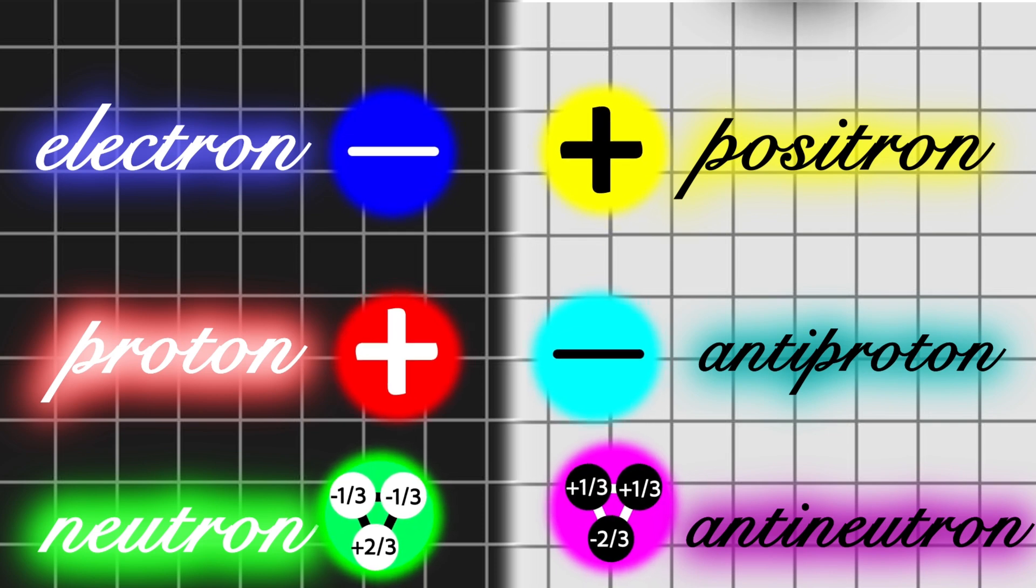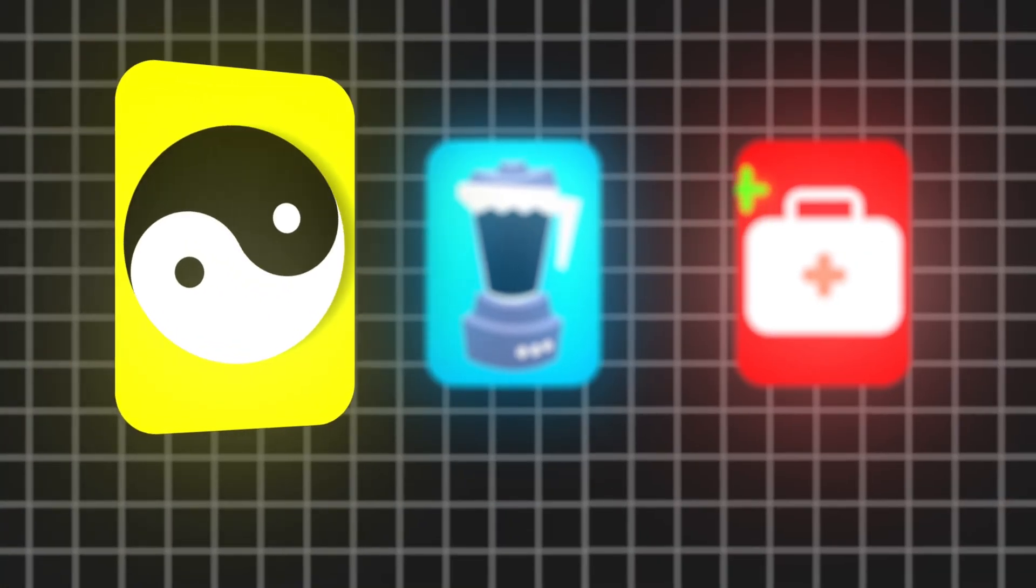Now, if a matter and antimatter particle come into contact with each other, they annihilate, turning 100% of their mass into energy. E equals mc squared. And that brings us to how it's made.